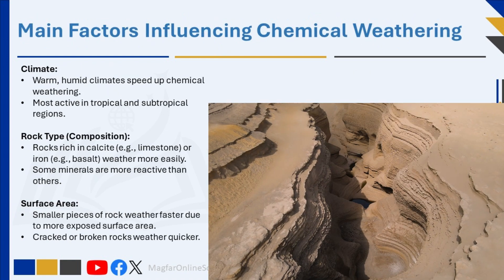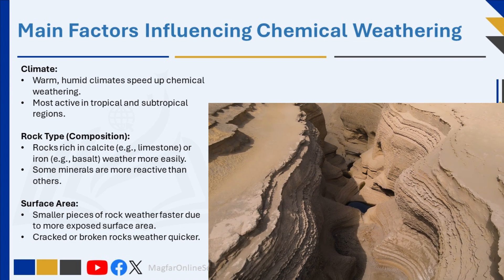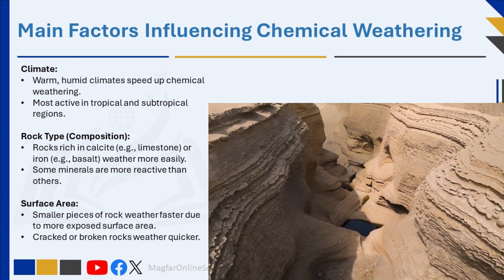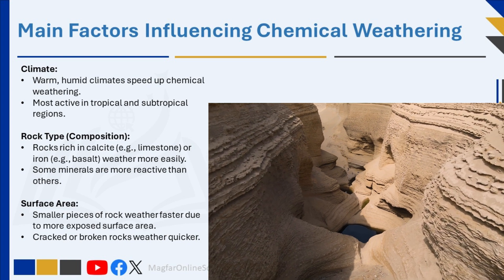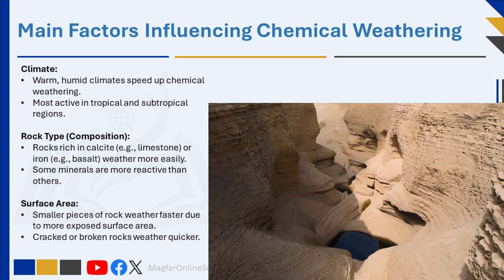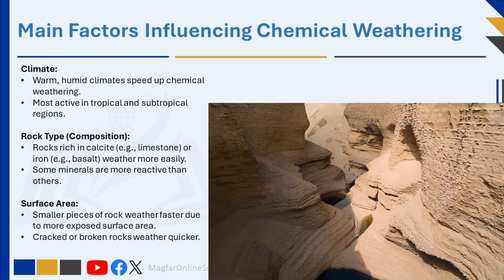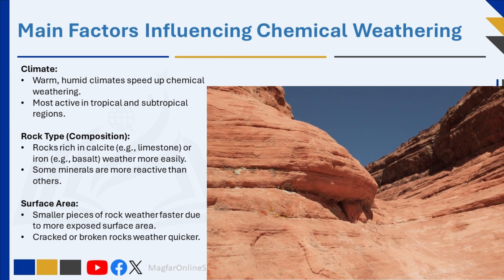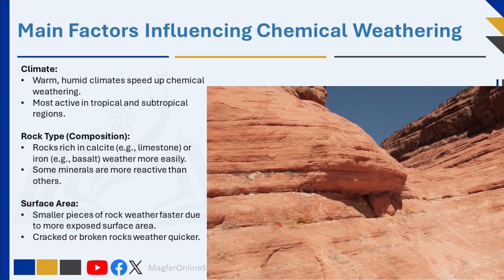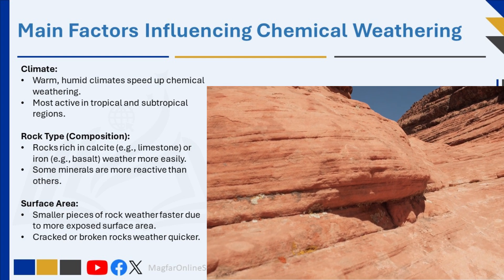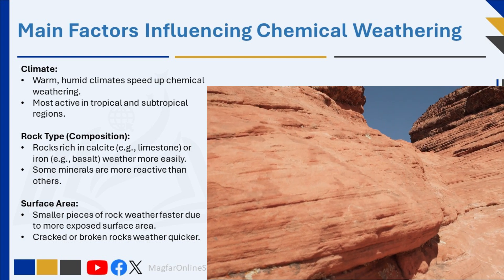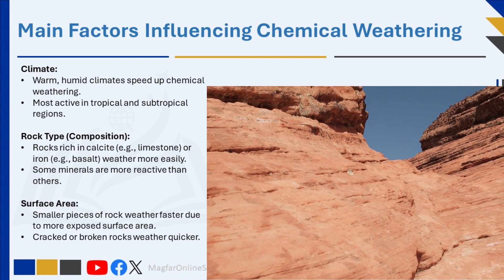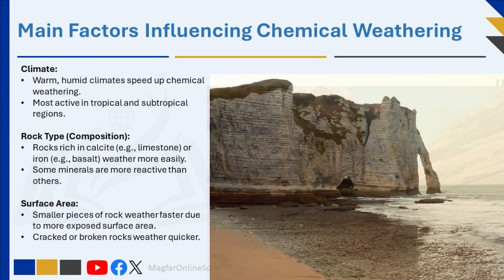Chemical weathering is the natural process that transforms solid rock into new substances through chemical reactions involving water, oxygen, carbon dioxide, and living organisms. This process is influenced by several factors: it occurs fastest in warm, humid climates; varies with rock composition — for example, rocks rich in calcite or iron weather more easily; and speeds up when rocks have a larger surface area exposed.